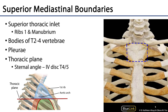The superior mediastinum is the superior portion of the mediastinum. Its borders include the first rib and superior thoracic inlet anterosuperiorly. Posteriorly we have thoracic vertebrae T2, T3, and T4 — at least their bodies. And then inferiorly we have the thoracic plane, the plane prescribed by the line between the sternal angle and the intervertebral disc between T4 and T5.